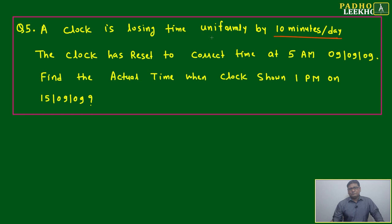The question can be made more complex. They can say it is not losing constantly - after every day it changes by some percentage. Like Monday to Tuesday it lost 10 minutes, but Tuesday to Wednesday it is losing 10 percent extra, means 11 minutes, then next day again 10 percent extra. This can be a possibility.